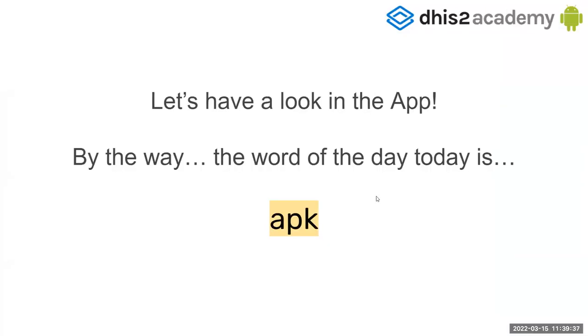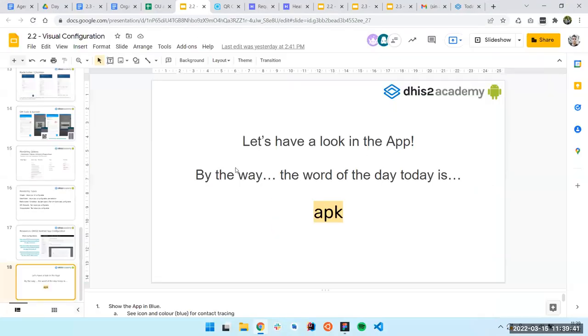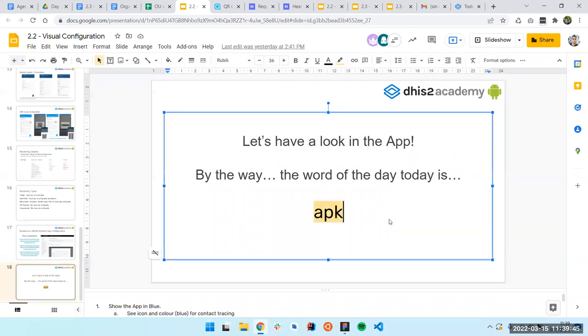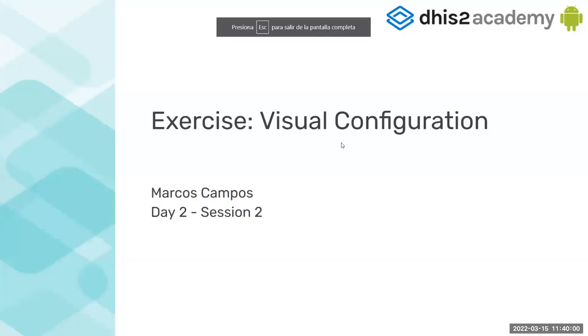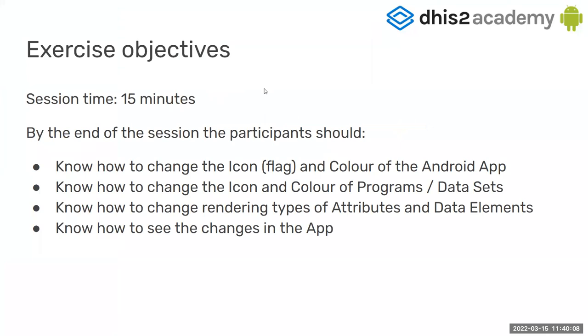That's it for the presentation. Now I'm going to go to the exercises. Just to remember, the word of the day is APK — for those that were asking before. Let's see the visual configuration exercise now. By the end of the session, you will need to know how to change the icon, the flag, the color, and the app. I already did the flag for you since that's something only admins can do, so you don't have to do it in the exercise.